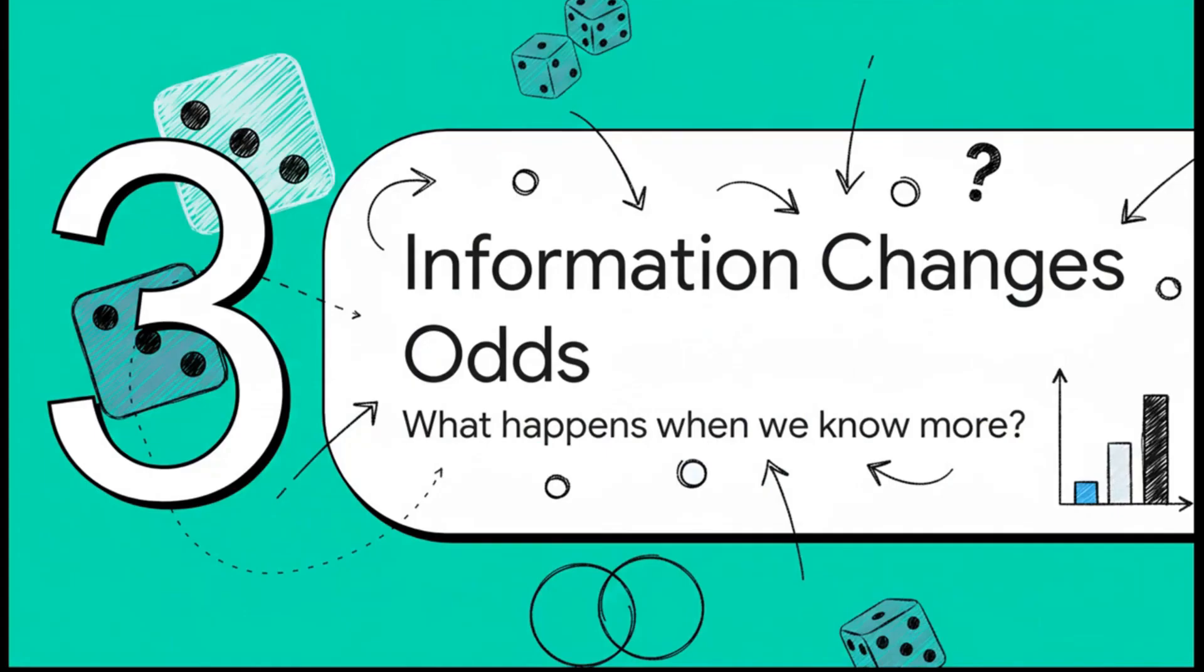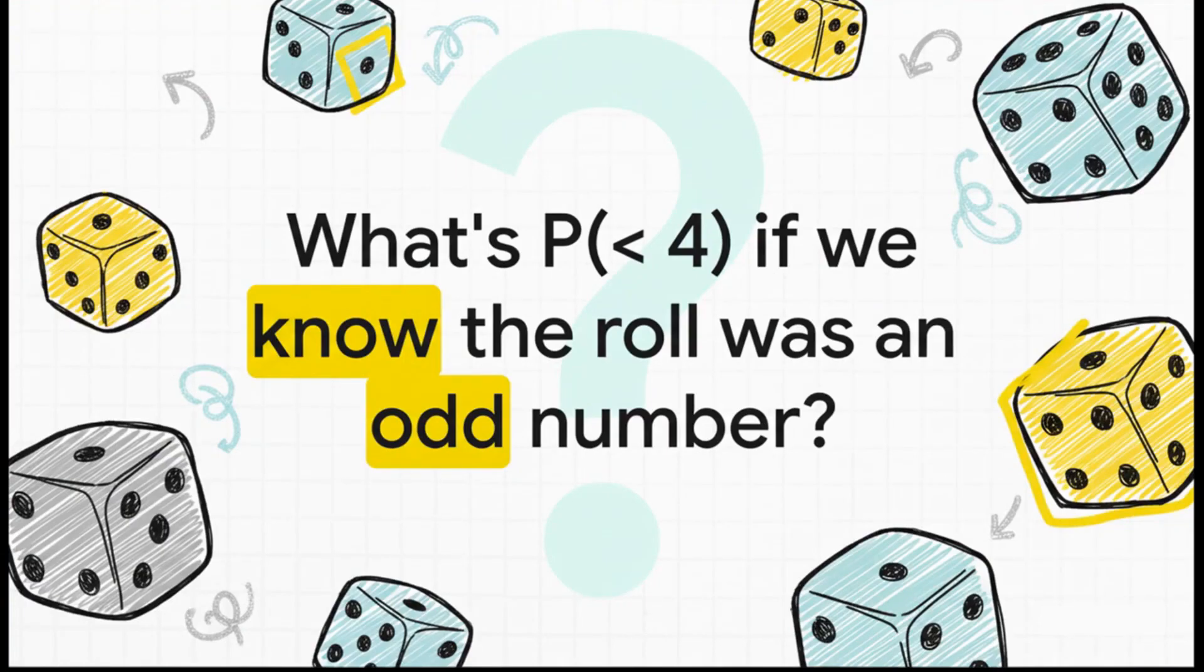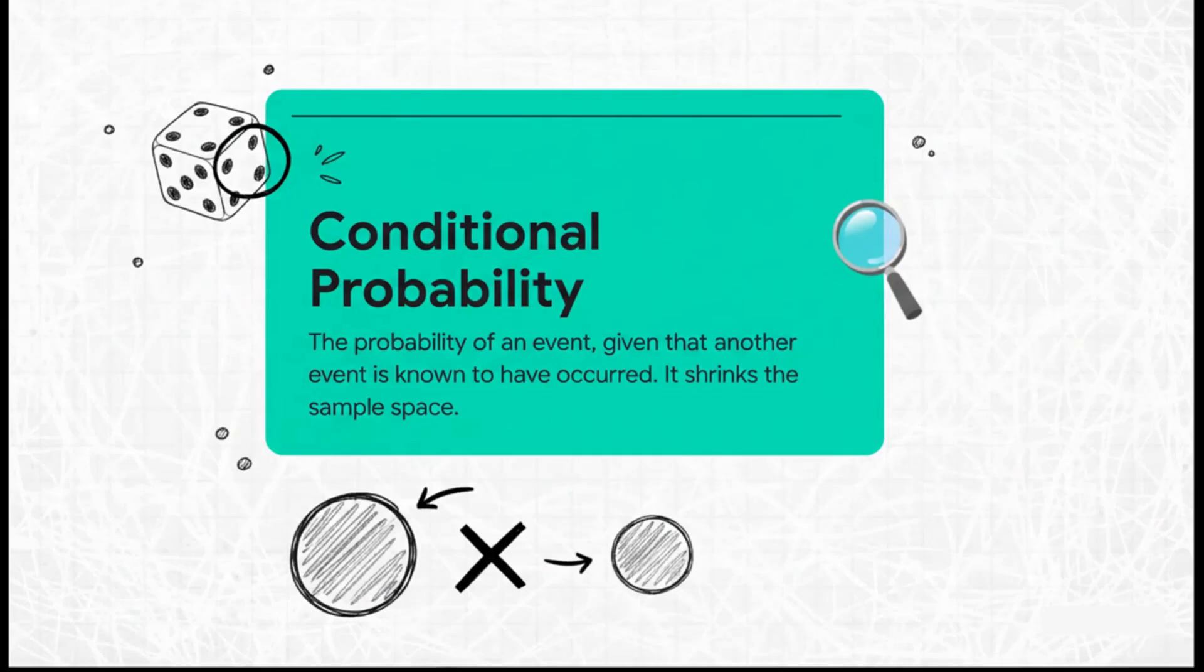So we have our rules. But what happens when this situation changes? This is a huge idea in probability. It's not static. The odds can actually shift as you get new information. And this, this is where things get really, really interesting. So let's think about this. With our die, the numbers less than 4 are 1, 2, 3. That's 3 possibilities out of 6 total. But what happens to those odds if I give you a little clue? What if I lean over and tell you, hey, the result is definitely an odd number? Does that change how you'd calculate the chances?